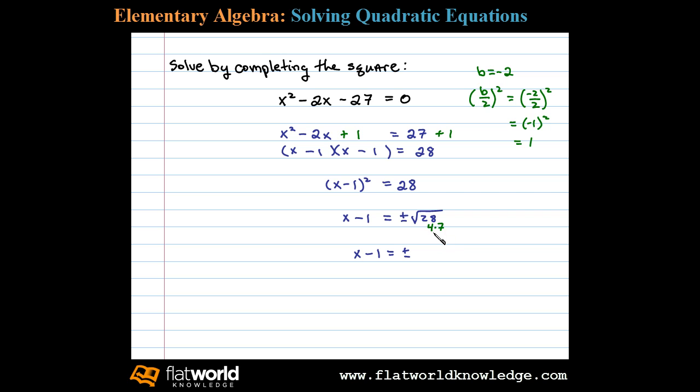We can write x minus 1 equals plus or minus 2 times the square root of 7. And then finally, adding 1 to both sides, we have x equals 1 plus or minus 2 times the square root of 7. These are the two solutions to the original equation gotten after we solved by completing the square.